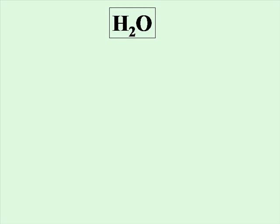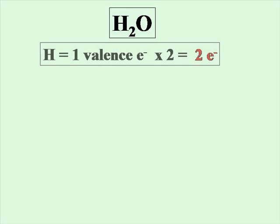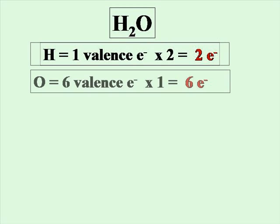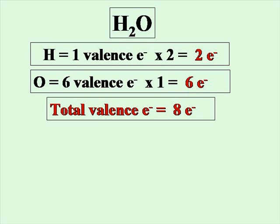Let's write the Lewis structure for water. There are two hydrogens, each contributing one valence electron, for a total of two electrons from the hydrogen atoms. There's one oxygen atom, which brings six valence electrons. We're now working with a total of eight valence electrons — we can't use any more or any less than this.